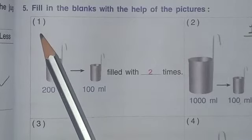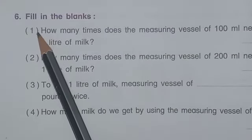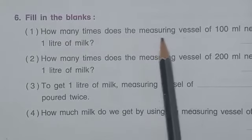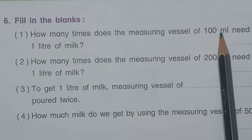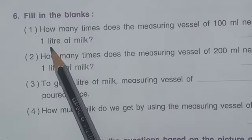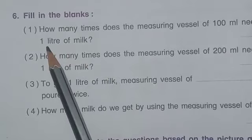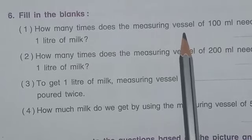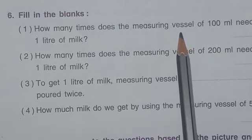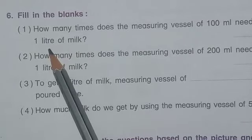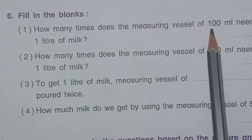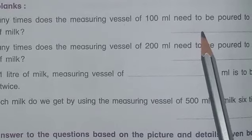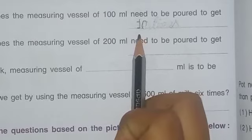Last hour, question number 5 was completed. Today, we start question number 6, filling the blanks. First one: how many times does the measuring vessel of 100 milliliter need to be poured to get 1 liter of milk? So, 1 liter means 1000 milliliter. 1000 divided by 100 gives 10 times. Write 10 times in the first blank.